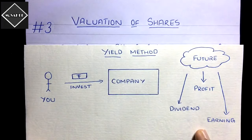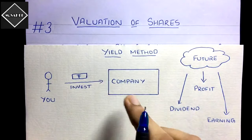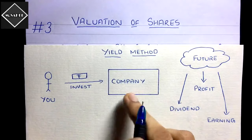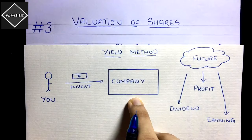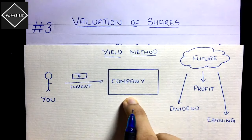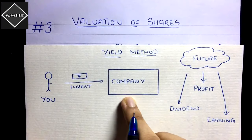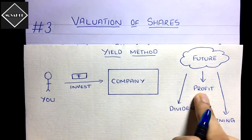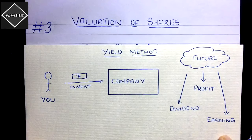With the ratio of earnings, dividends, and profit, the method calculates the value of a share. Keep in mind this method is based on future assumption. The previous method — net assets or intrinsic value method — had a liquidation assumption, meaning the company would be closing down. Here there is no such assumption; the company will continue into the future, which is why people will invest. No one invests in a liquidating company. The company values its shares on the basis of future dividend, profit, and earnings.